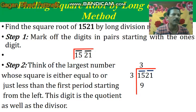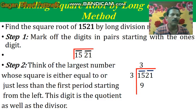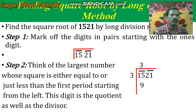In the repeated subtraction method and the prime factorization method, it is too lengthy to find out the square root of larger numbers. But the long division method is a very easy method, and in this method you can find out the square root of larger numbers also.